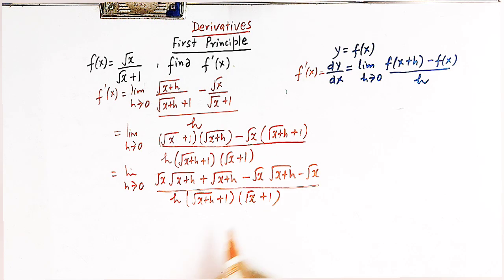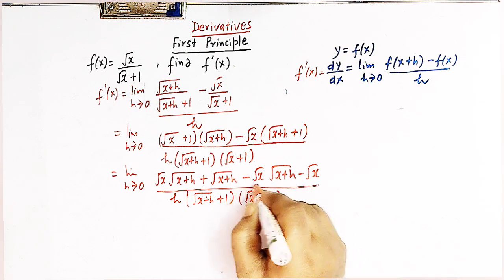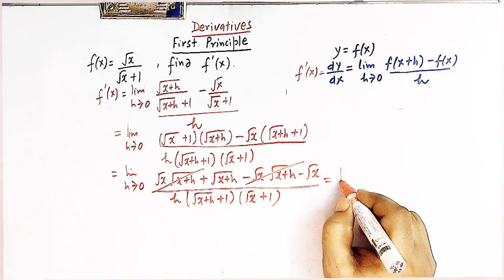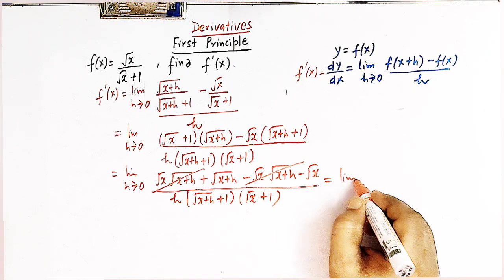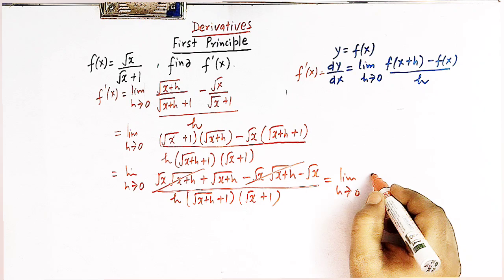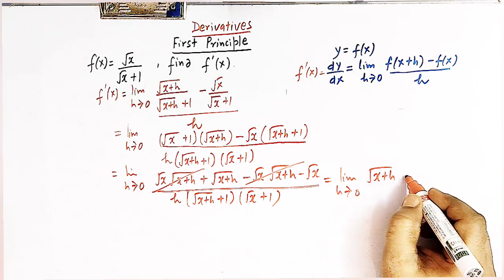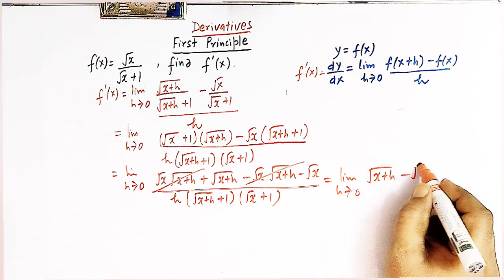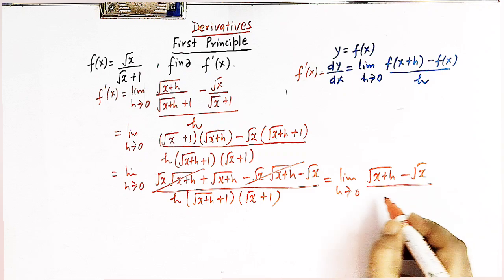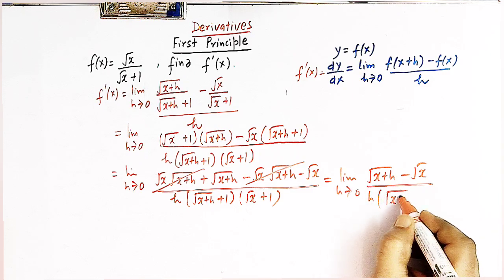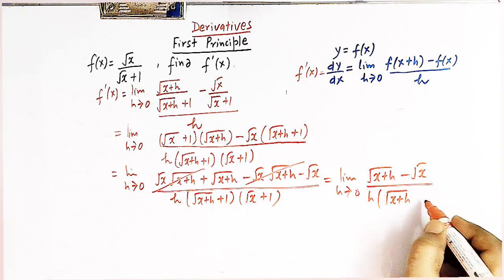We can now see that the terms √x·√(x+h) cancel each other, and we are left with the limit h tends to 0 of [√(x+h) − √x] divided by h × (√(x+h) + 1) × (√x + 1).